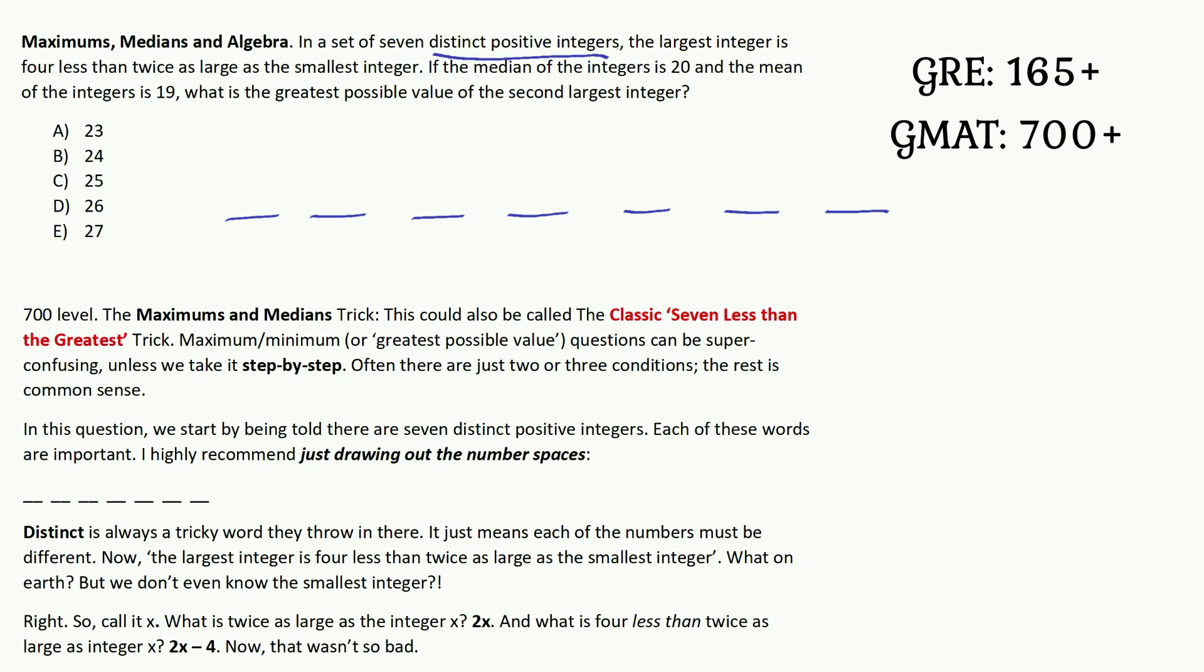You should be very alert when those words come up. Distinct, so each number is different from another number. Positive, that's brilliant, so no zeros or negative numbers. And integers, no decimals. Very important.